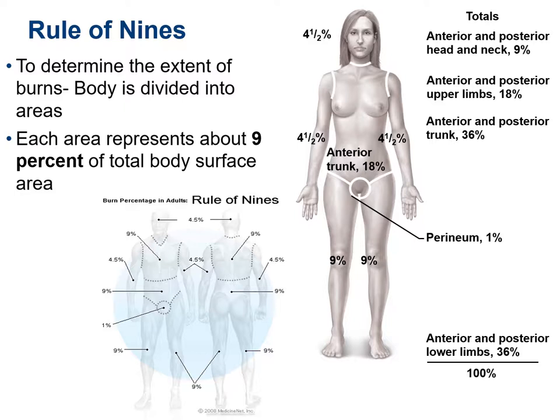How do we calculate the percentage of burns? To determine the extent of burns, there is a particular rule known as the rule of nines, where the body is divided into areas and each area represents about 9% of the total body surface area. If you look at the figure, consider the upper limbs — the anterior surface of each upper limb is 4.5% and the posterior surface is also 4.5%.